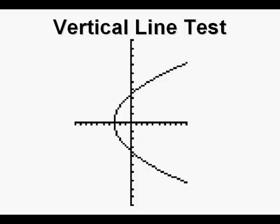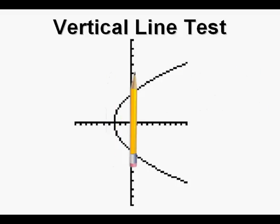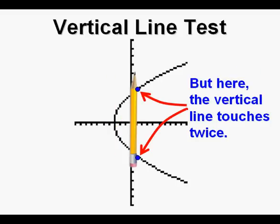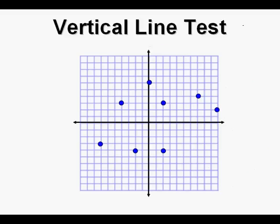There we have this sideways curve, and we're going to use a pencil. We see the pencil touches the vertical line at one point here, and we move it farther to the right. Here we see the vertical line touches twice. Therefore, this graph of a curve fails the vertical line test and is not a function.